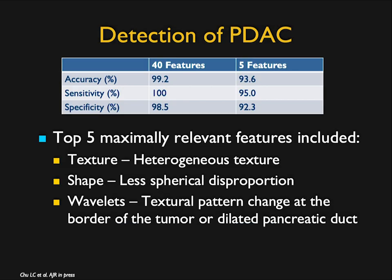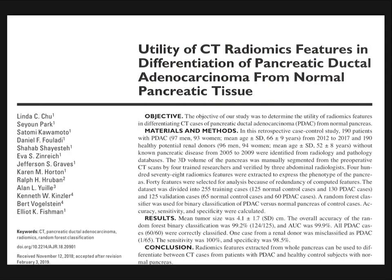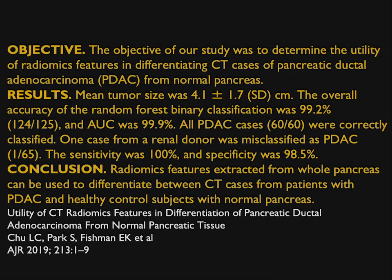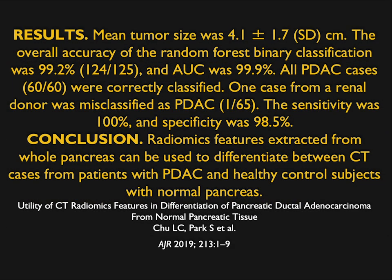The top five features gave you accuracy in the mid-to-low 90s — texture, shape, wavelengths. But you want to be at 99%, so you need all 40 features. Linda Chusey and Parker wrote an incredible article on CT radiomics features in pancreatic adenocarcinoma, concluding that quantitative analysis of imaging features offers the potential for computer-aided diagnosis. Radiomics features extracted from whole pancreas can differentiate CT cases from patients with adenocarcinoma versus healthy subjects. Our average tumor size was about four centimeters, but this seems to work even with smaller tumors.